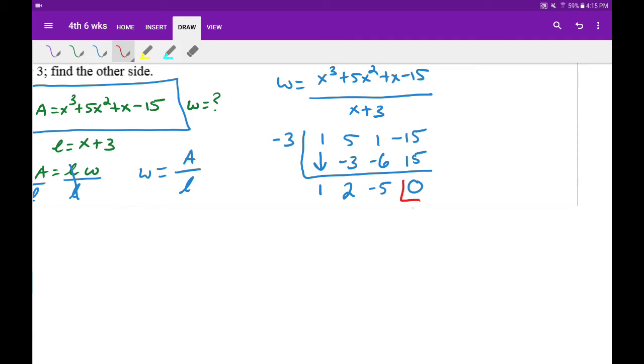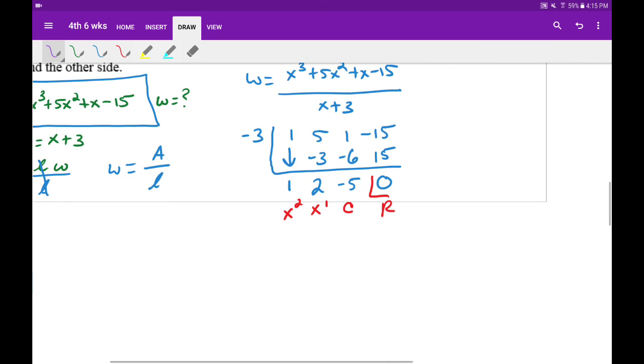Using our synthetic division, working right to left, that is my remainder, constant, x power 1, x power 2. So what turns out to happen is that our width is going to equal x squared plus 2x minus 5.